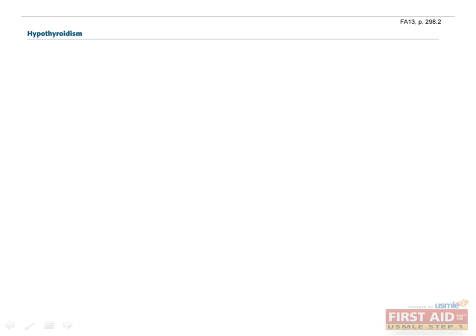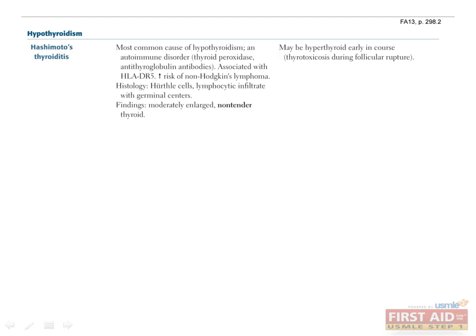There are many different causes of hypothyroidism. Hashimoto's thyroiditis is the most common cause and one you should be very familiar with. Hashimoto's is an autoimmune disorder and antimicrosomal and antithyroglobulin antibodies are typically found in the serum. Antimicrosomal antibodies are now also called antithyroid peroxidase antibodies, and you may see either term on the USMLE. An association with HLA-DR5 and elevated risk for non-Hodgkin's lymphoma has been observed. Although Hashimoto's is the most common cause of hypothyroidism, it can actually cause temporary hyperthyroidism early in its course due to rupture of thyroid follicles and release of thyroid hormone.